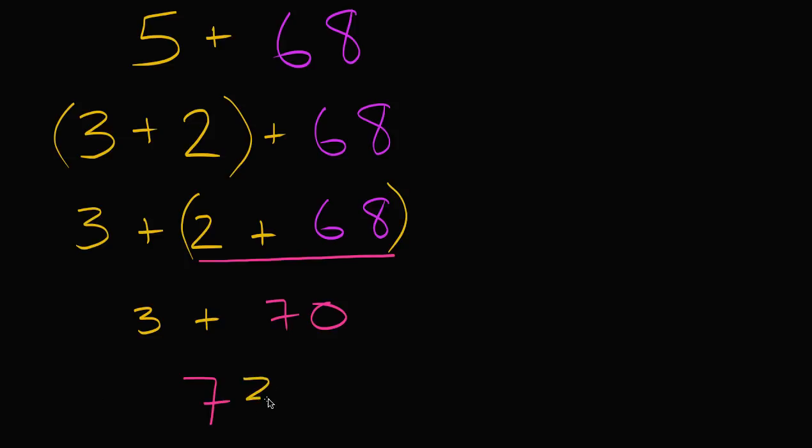Now it might seem like this really long way of doing it, but this is just a way to think about it. In your head, you would say, okay, five plus 68. Well, let's see, if I add two to 68, I'll get to 70. And so, let's see, five is three plus two. I add the two to 68, I get to 70, and I have three left over, so it's going to be 73.